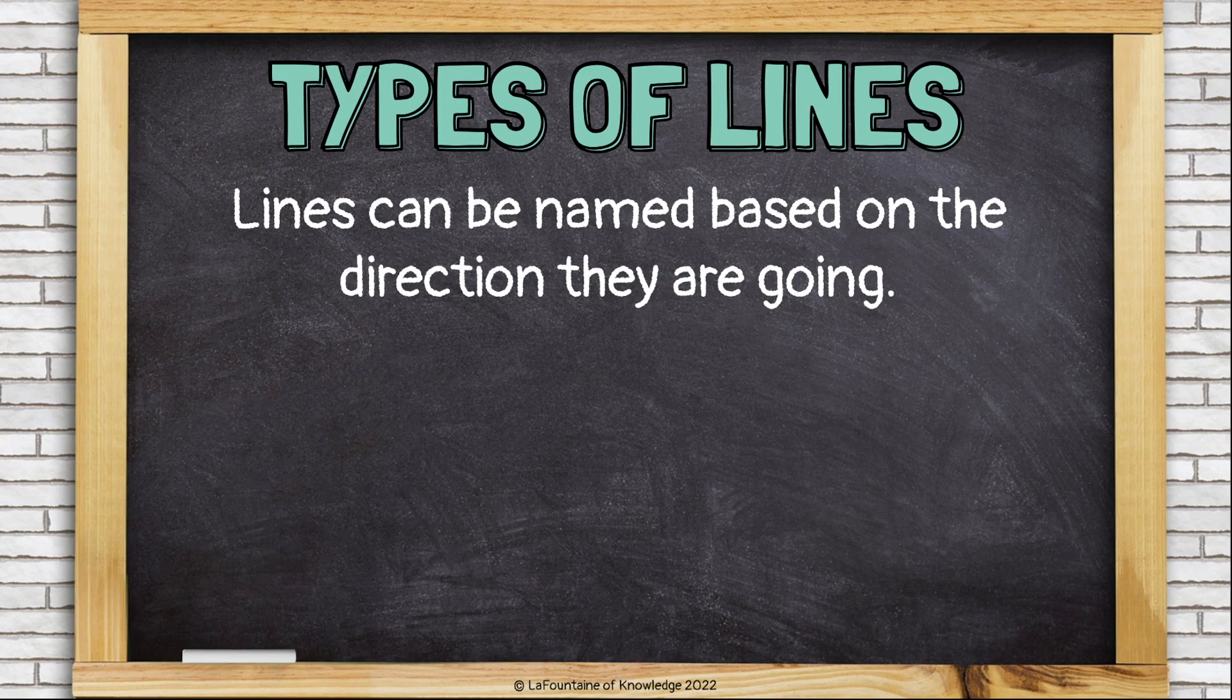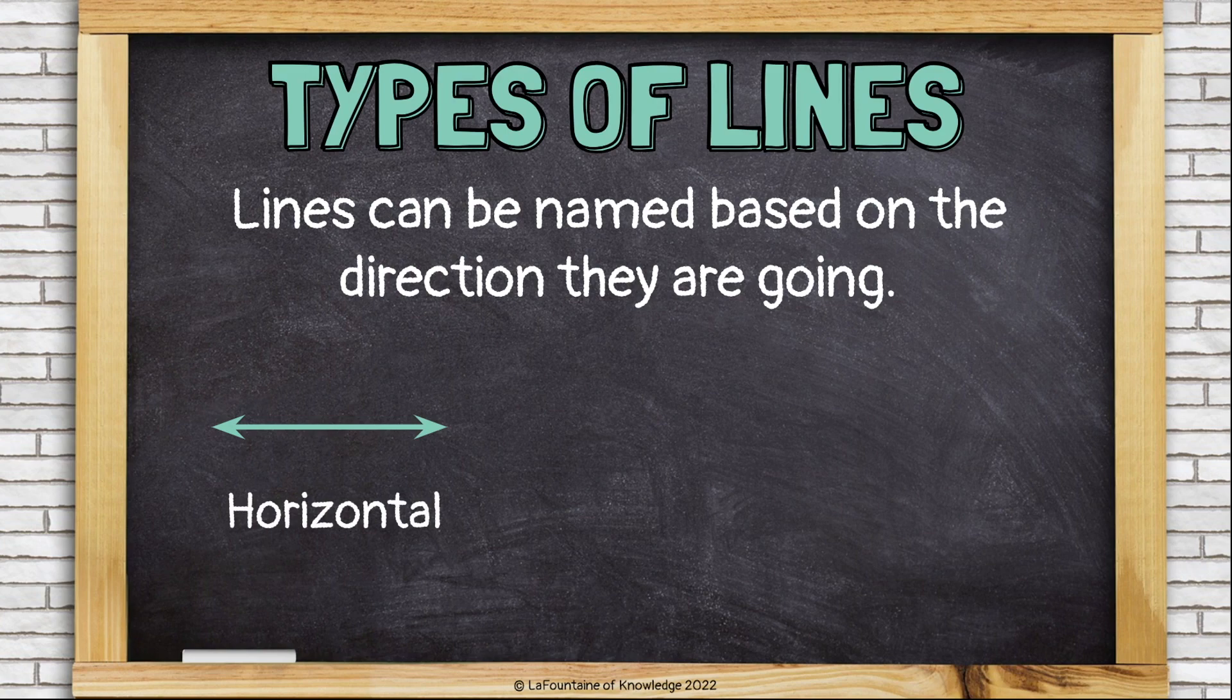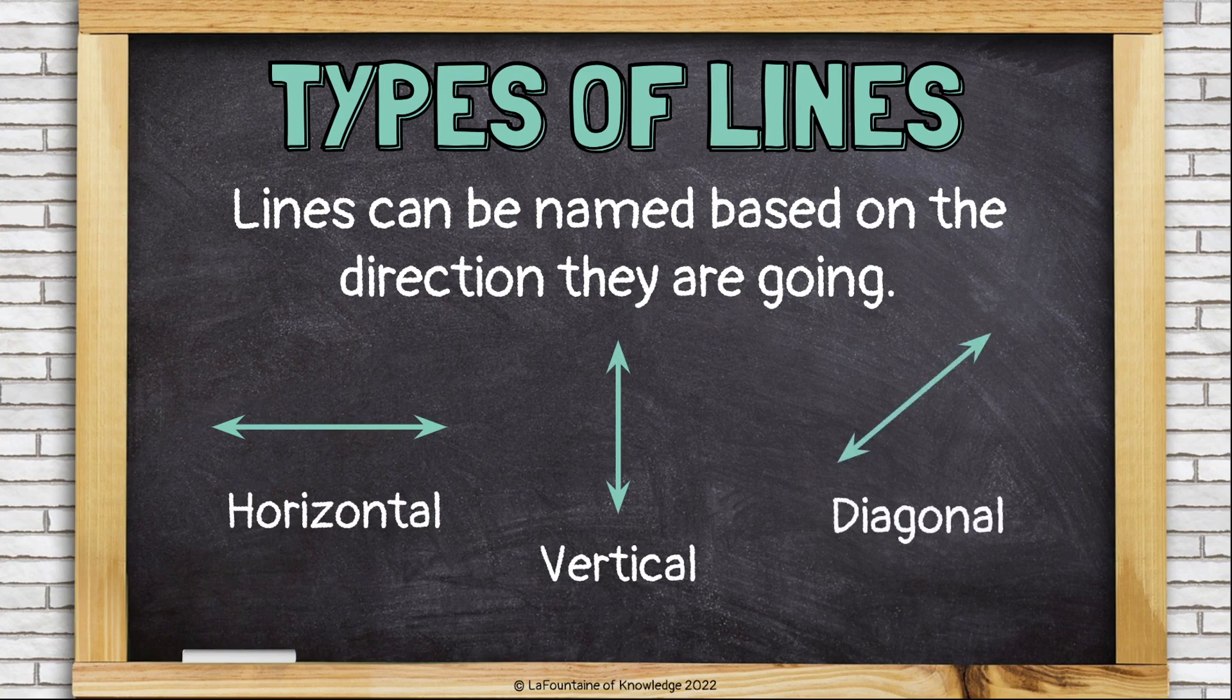Lines can be named based on the direction they're going. Horizontal lines go side to side, left to right, like the horizon. Vertical lines go up and down and diagonal lines go from corner to corner.